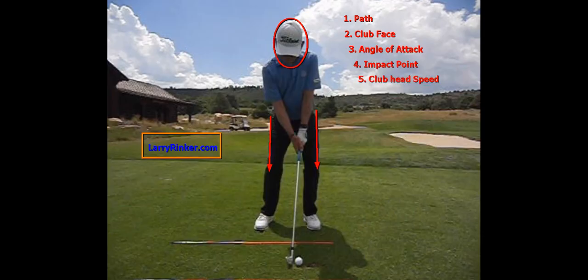So where your golf ball goes comes down to: what's the path of the club head, where was the club face at impact, what was your angle of attack, where did you hit the ball in the club face — the impact point — and what your club head speed is. For more information, go to LarryRanker.com.